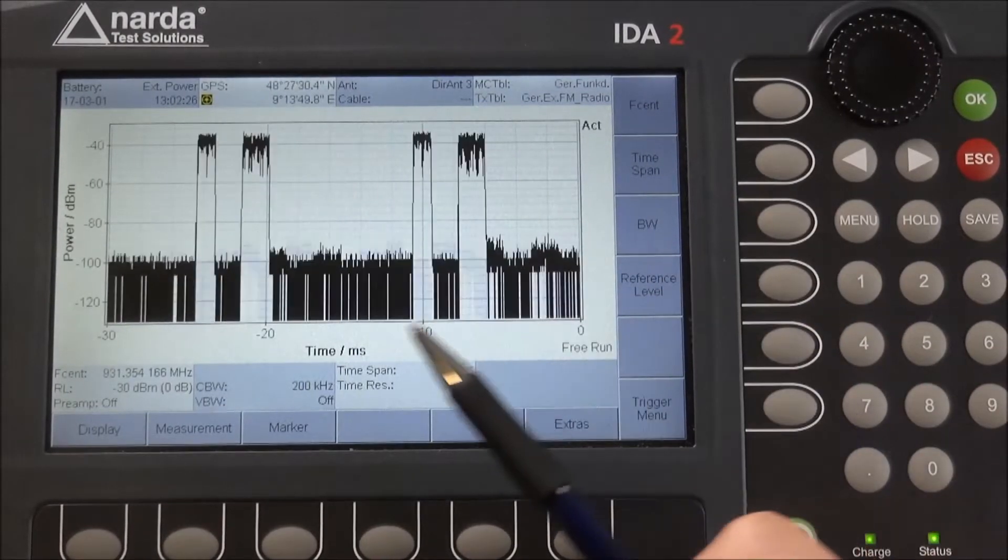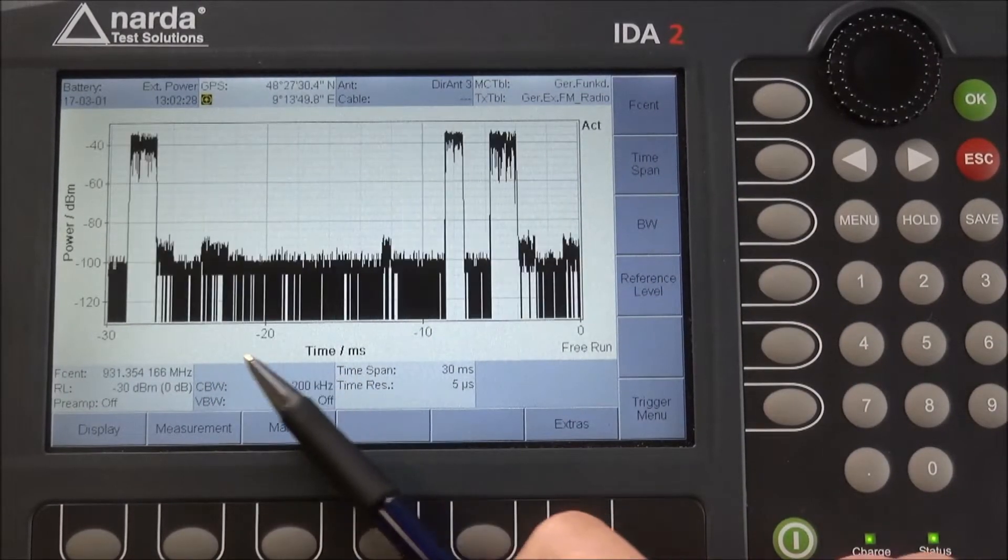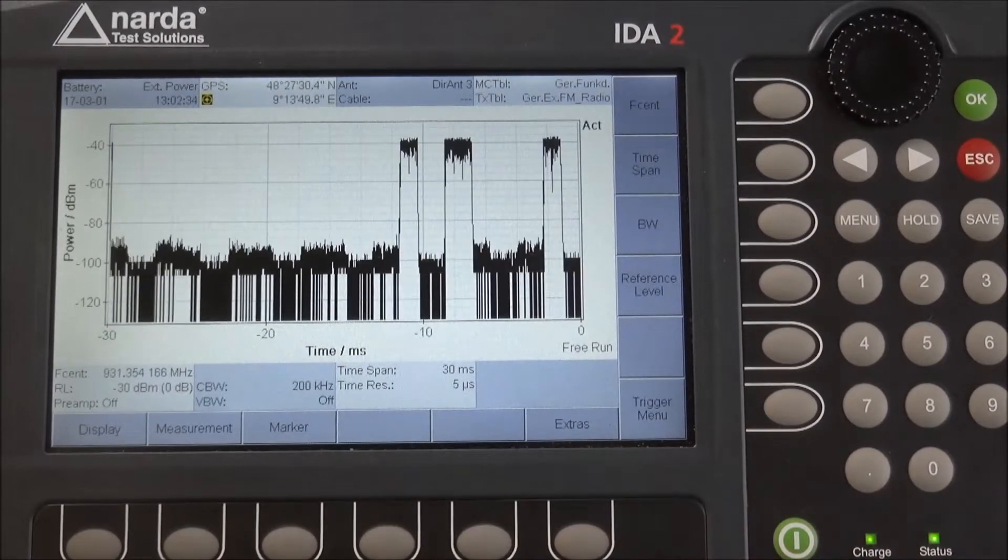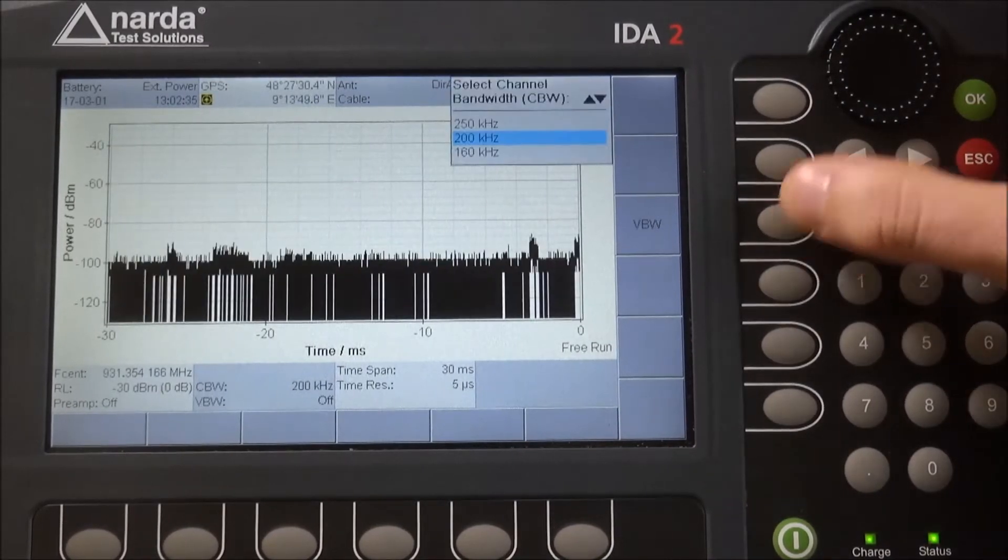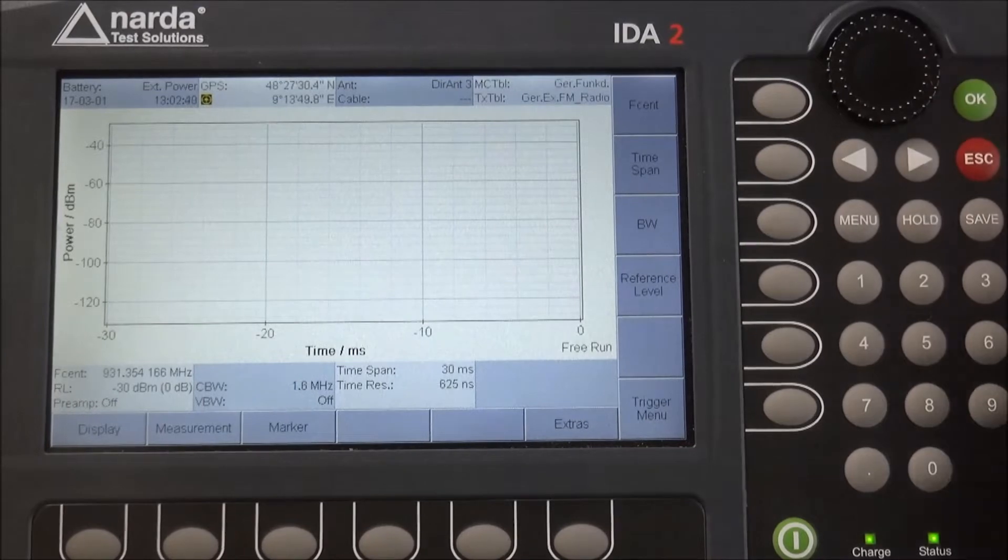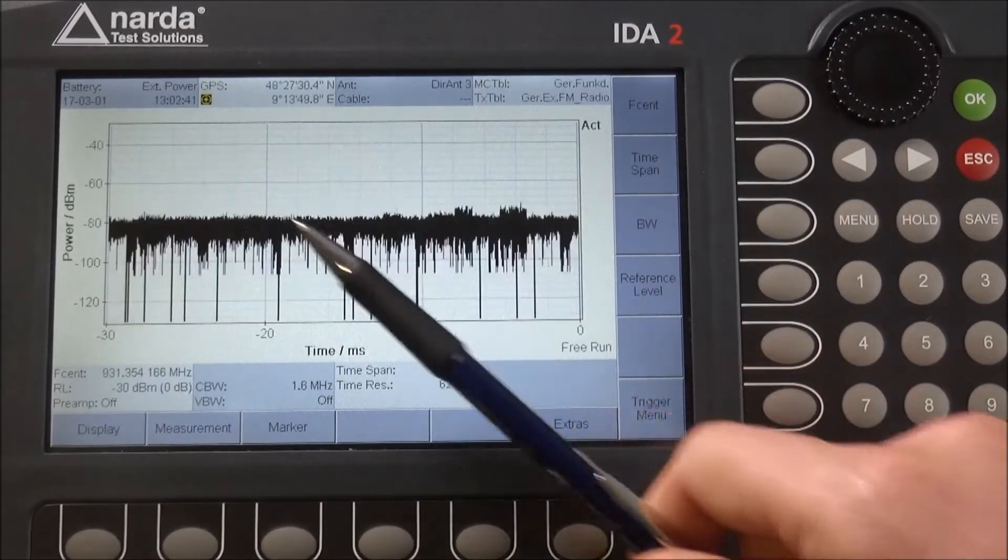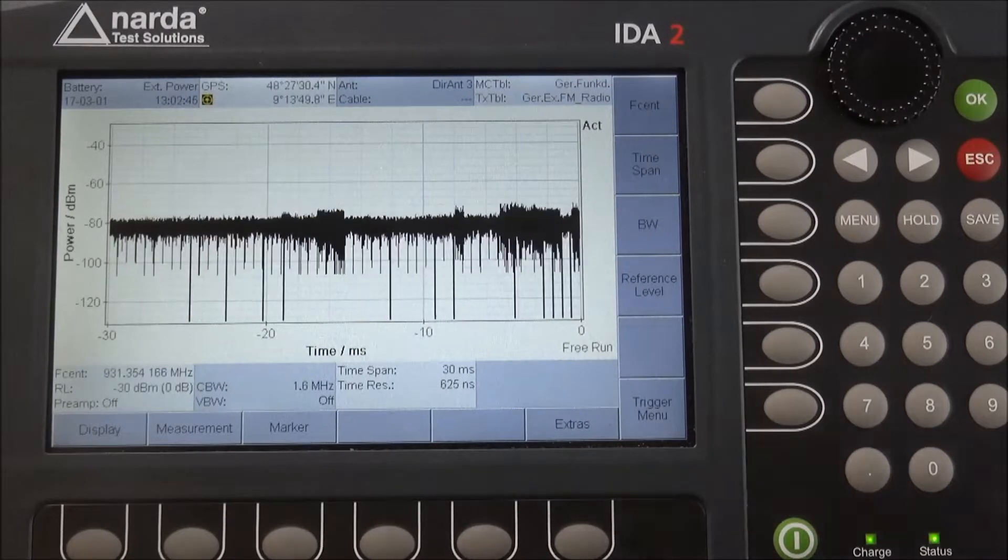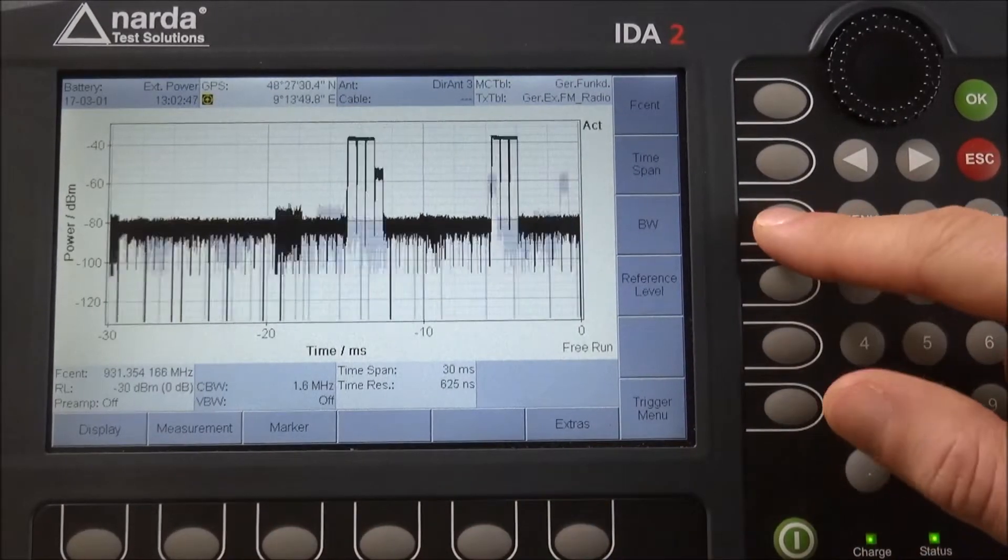In the scope mode, we have to make sure that the channel bandwidth is still correctly set. For GSM typically we use something like 200 kilohertz. We can take a higher bandwidth, but that would mean measuring several GSM signals simultaneously. Let me go back to 200 kilohertz again.